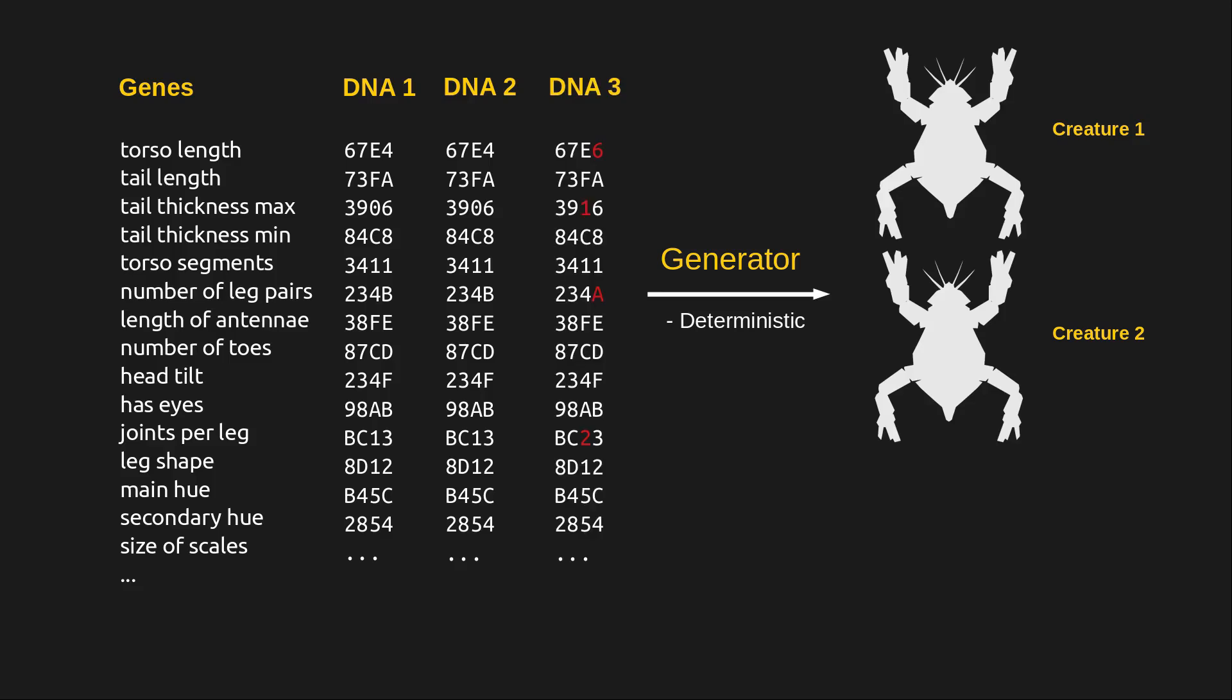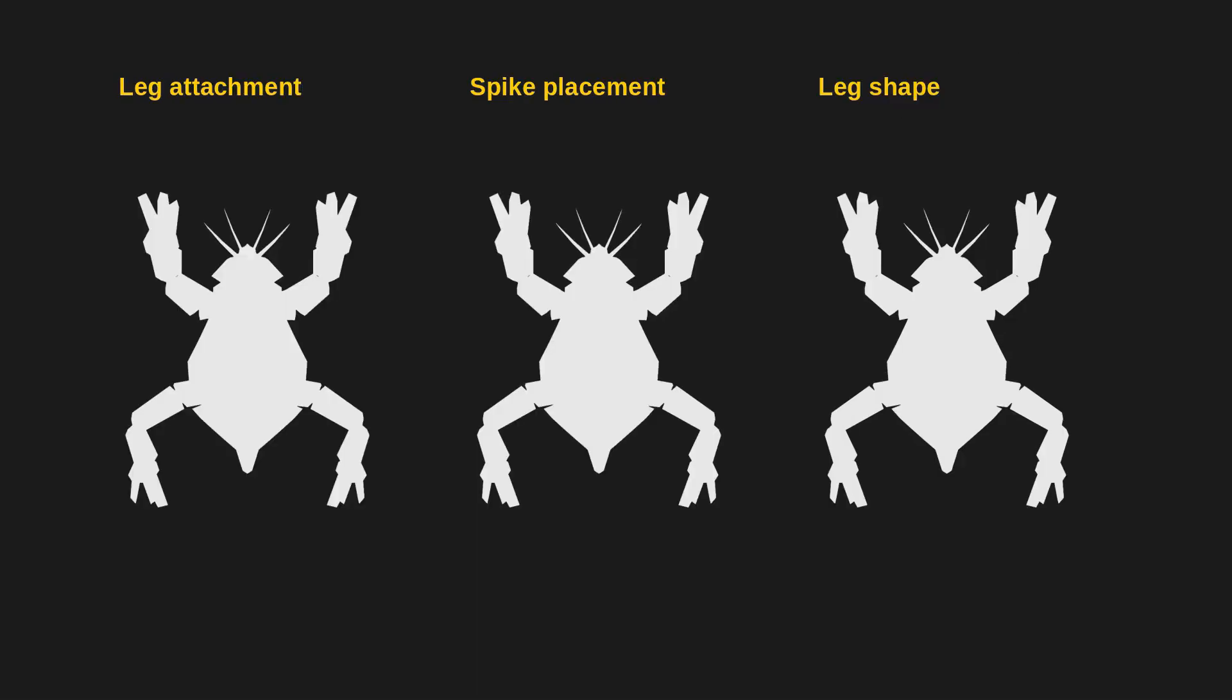However, if we now make small changes to the DNA, we expect the resulting creature to be slightly different. I call this property continuity. For some of the genes, like the tail length or the width of the head, this is trivial. But there are some steps in the process where it's not quite so obvious. For example, when I want to create the legs, I need to choose from which of the torso segments to grow them, but the number of torso segments can change. In a similar way, each segment defines certain points where spikes could be added, but I need to choose from which of these points I actually want to grow spikes for a certain creature. And lastly, when shaping the legs, each of the legs' joints is offset by a certain amount, but I don't know how many joints I have until I actually start creating the creature.